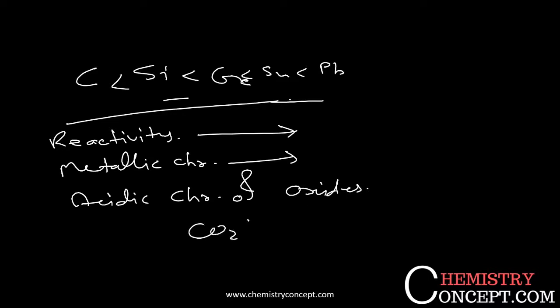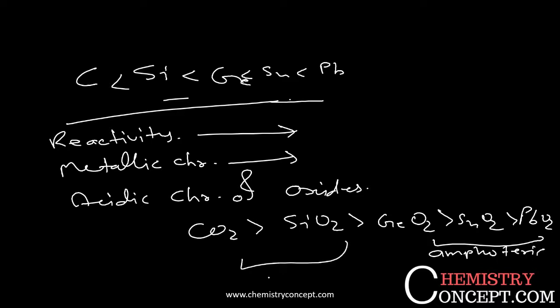CO2 is more acidic compared to SiO2, then GeO2, then SnO2, and then lead oxide. These are amphoteric and weak acids.